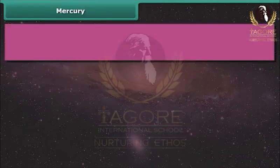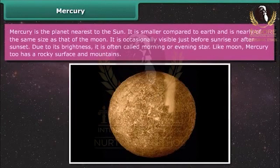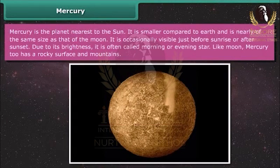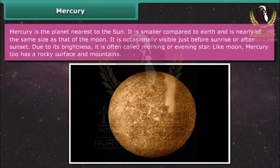Mercury is the planet nearest to the Sun. It is smaller compared to Earth and is nearly of the same size as the Moon. It is occasionally visible just before sunrise or after sunset. Due to its brightness, it is often called the morning or evening star. Like the Moon, Mercury too has a rocky surface and mountains.